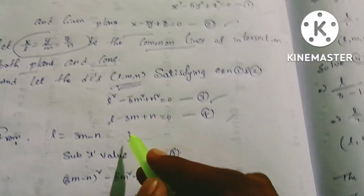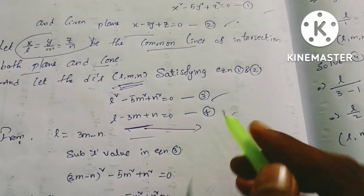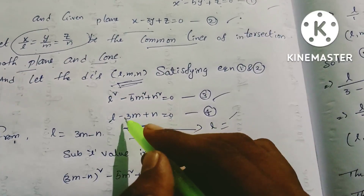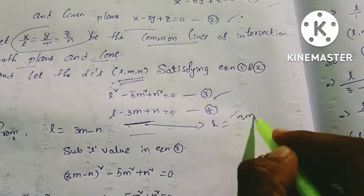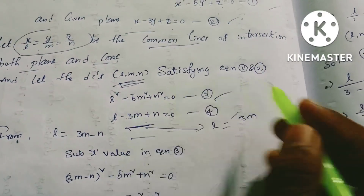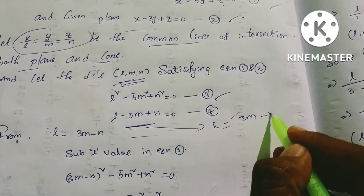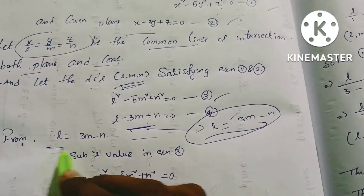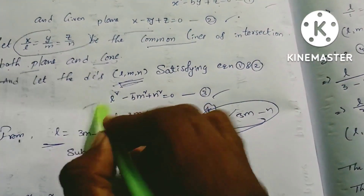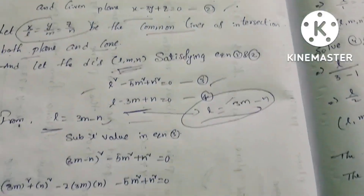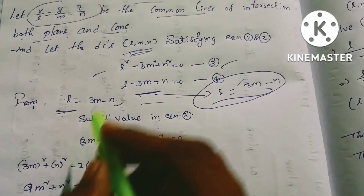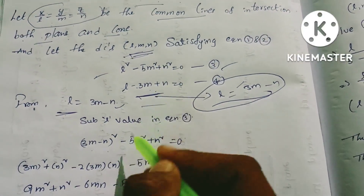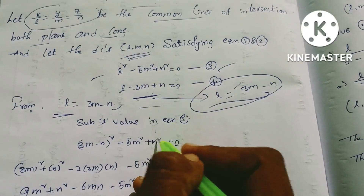From equation 4, we solve for L: L = 3M - N. Now substituting into equation 3: (3M - N)² - 5M² + N² = 0.